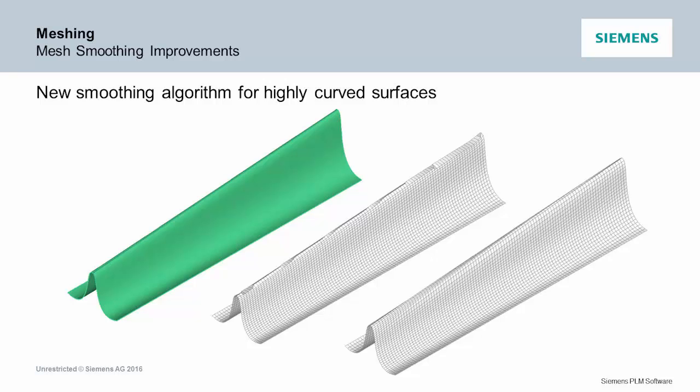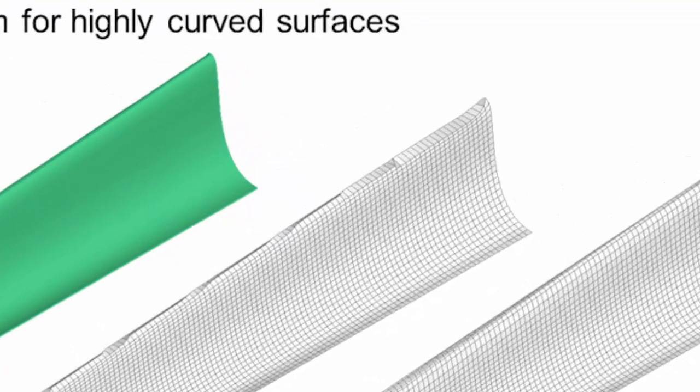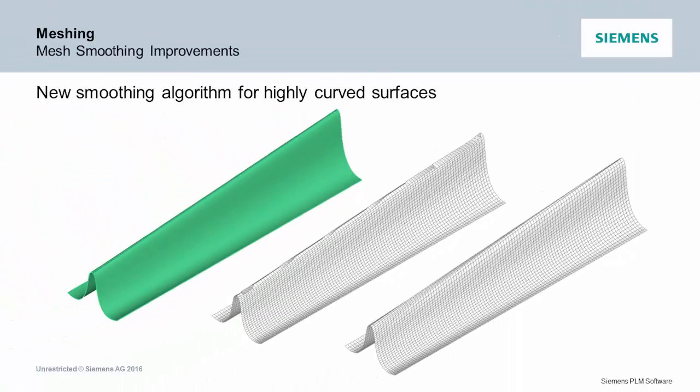We've also come up with a new smoothing algorithm. Our old smoother did a great job if the mesh wasn't super curved, but where it was curved, the smoothing would cause it to relax and kind of droop. We recoded that with a new, more 3D algorithm, so you now get better smoothing of meshes on highly curved structures.